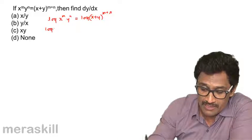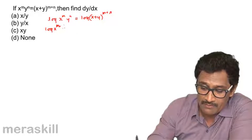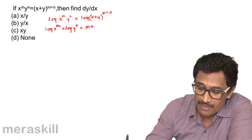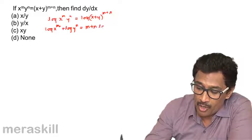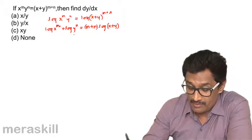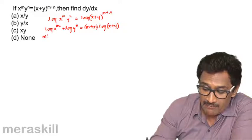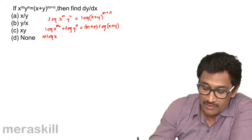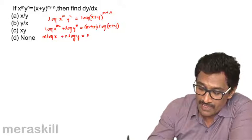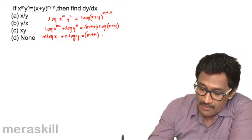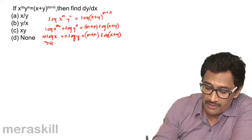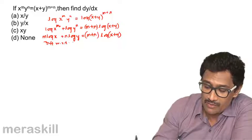This can be written as log(x^m) + log(y^n) equals (m+n)·log(x+y). This again can be written as m·log(x) + n·log(y) equals (m+n)·log(x+y), using the index rule for logarithms. Now differentiate with respect to x.